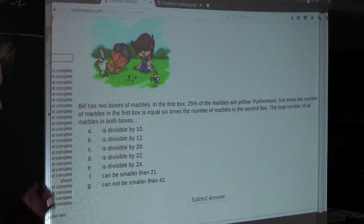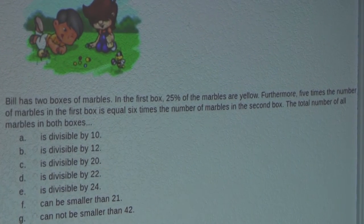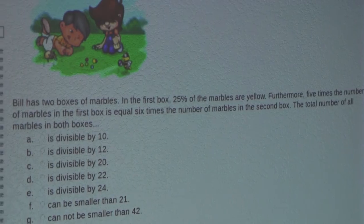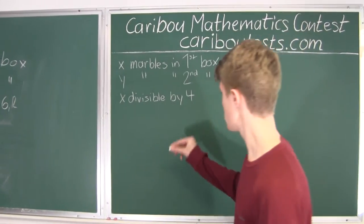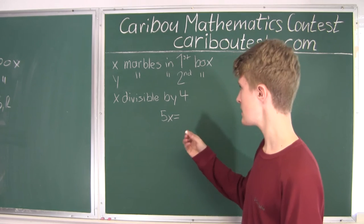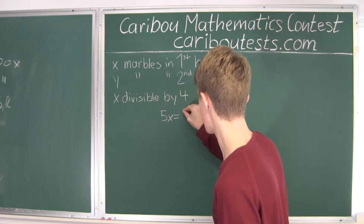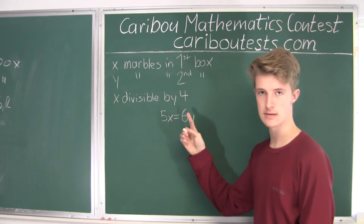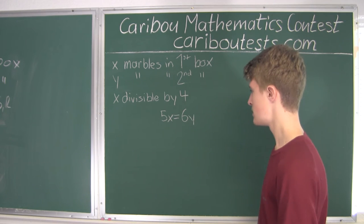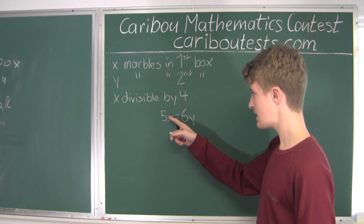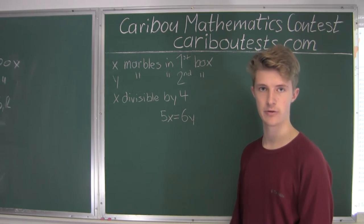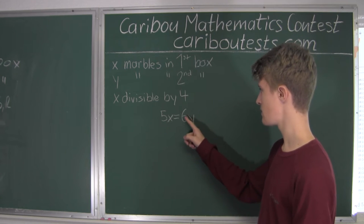Now let's look at the next sentence: 5 times the number of marbles in the first box is equal to 6 times the number of marbles in the second box. So we have 5X = 6Y. We know 5X is equal to 6 times something, which means 5X must be divisible by 6. But since 5 and 6 don't have any common factors other than 1, X must be divisible by 6.